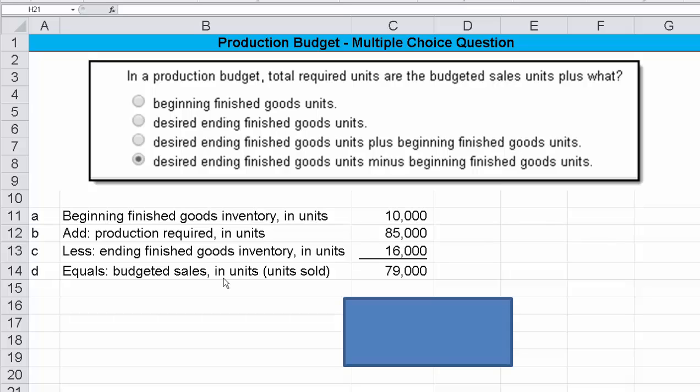But since we're doing this in units, what we have is beginning finished goods inventory in units. Then we add in what production is required, and that would give us a subtotal of total to account for, right? And then we would subtract out what's our ending finished goods units, and that would give us budgeted sales.